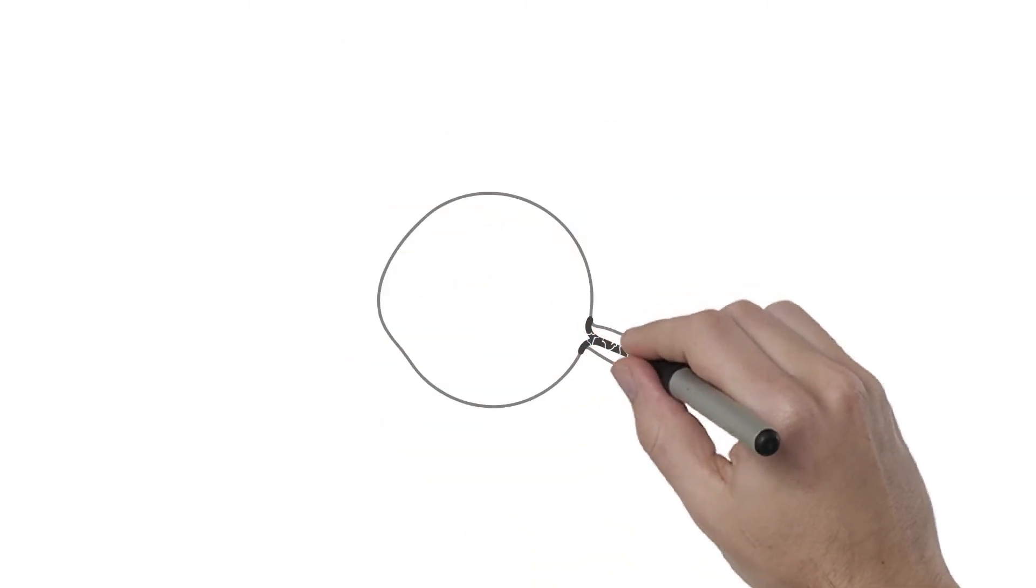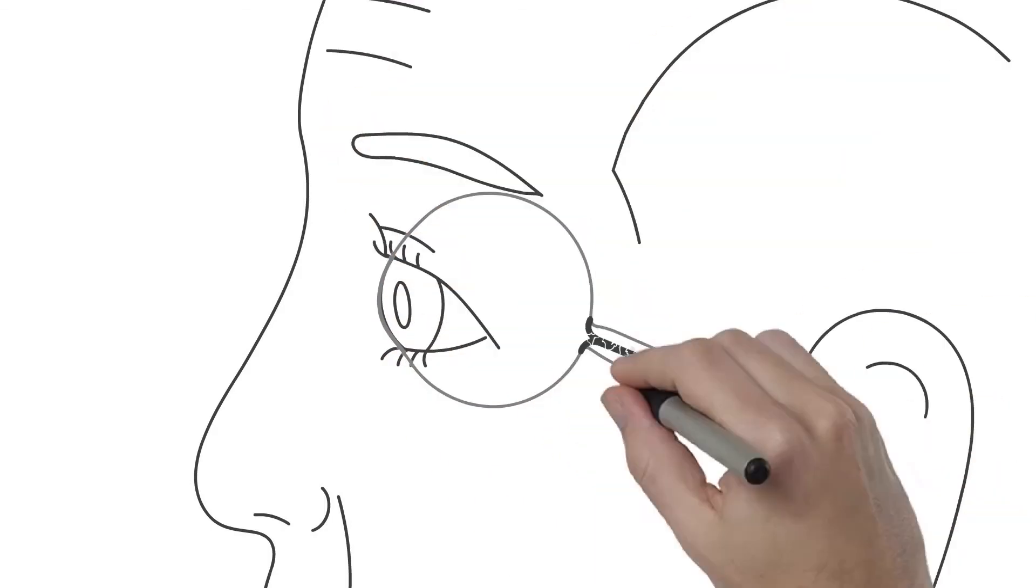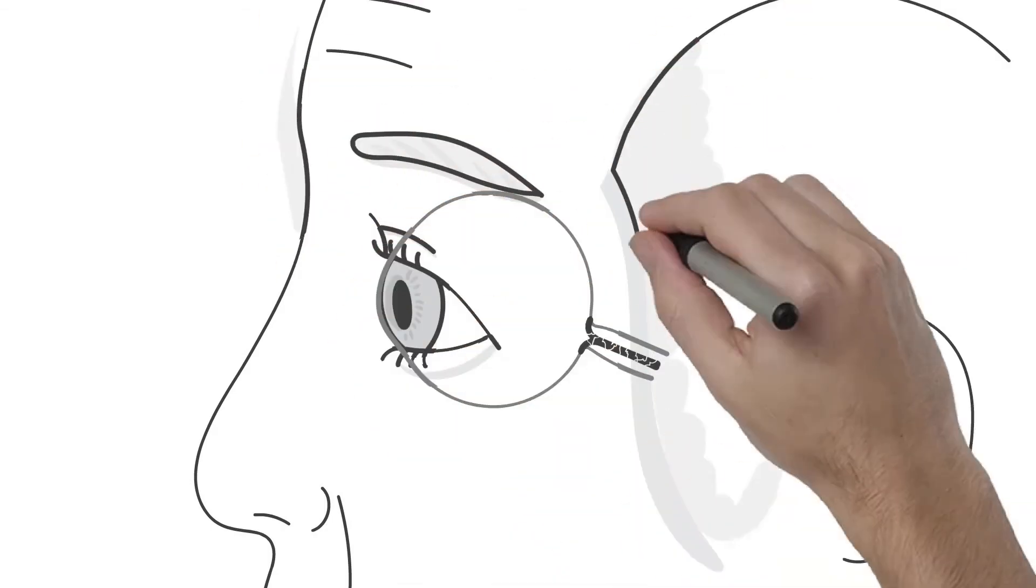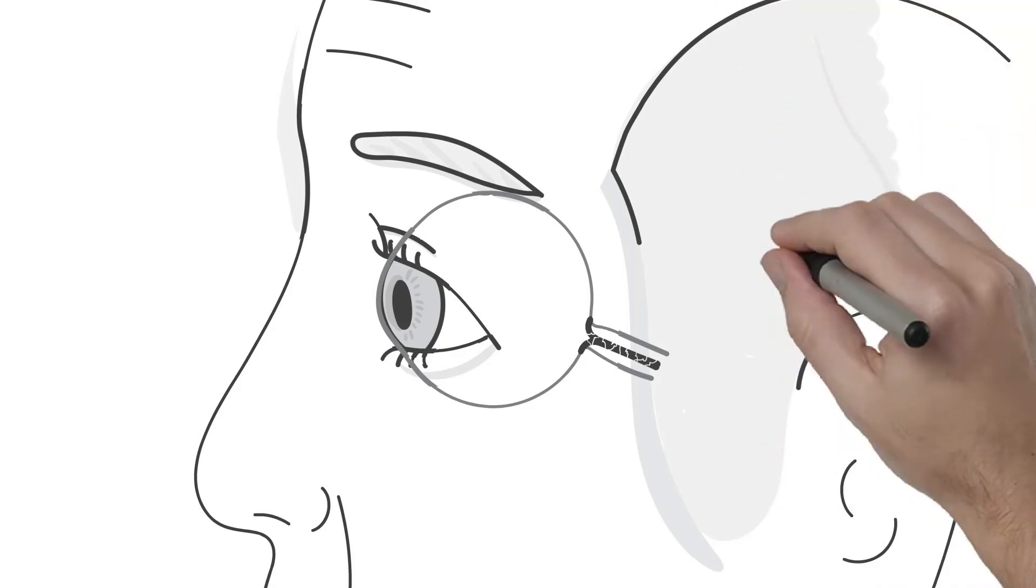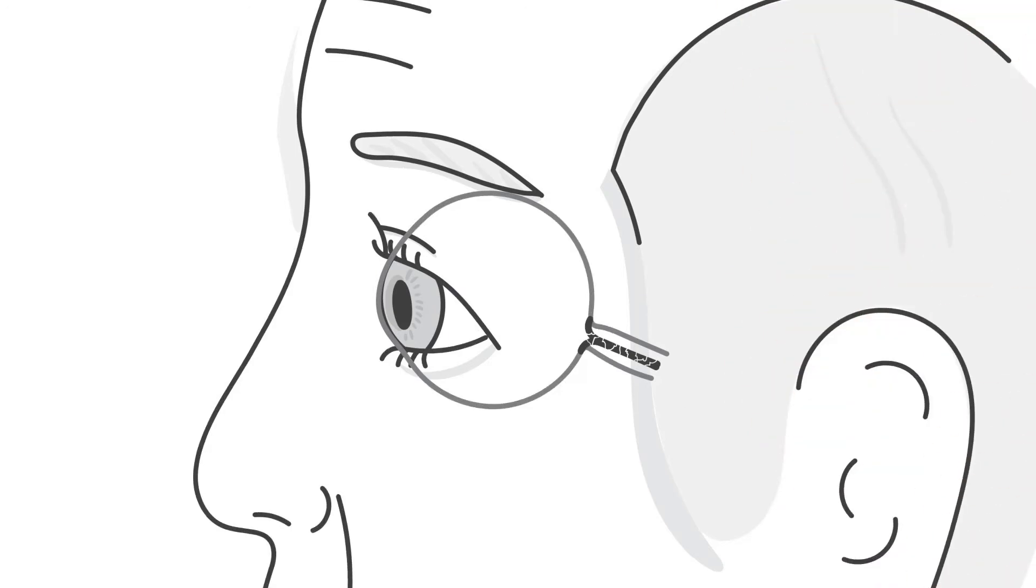Glaucoma is a tricky disease to treat because at the beginning it has no obvious symptoms. When the first vision loss is detected, the optic nerve is already irreversibly damaged. This damage is caused by elevated intraocular pressure.